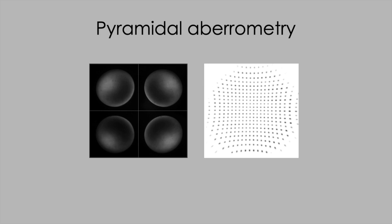However, there are laser systems that are much better adapted to topography guided treatment, and some surgeons argue that since the problem in irregular astigmatism is normally on the corneal surface, it's logical to derive your treatment information there. You can form a view on this when you've looked around in the literature.